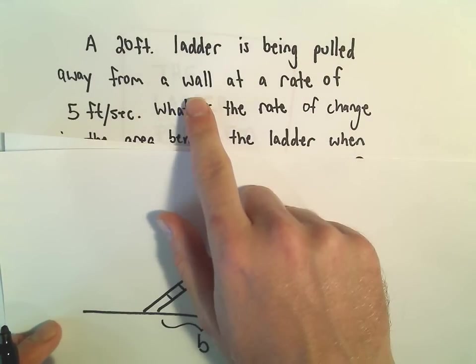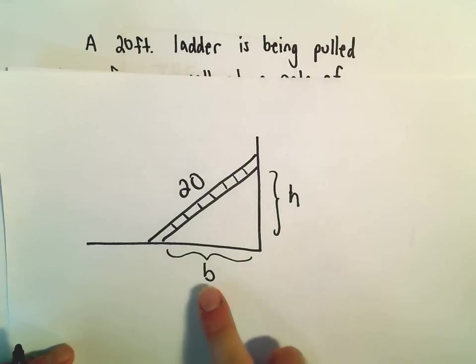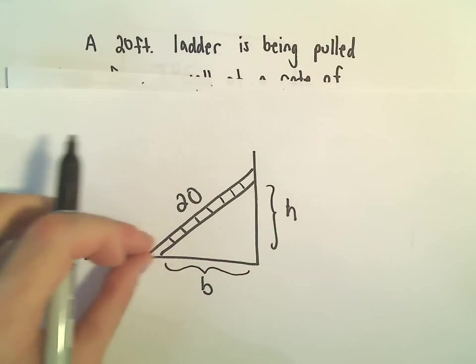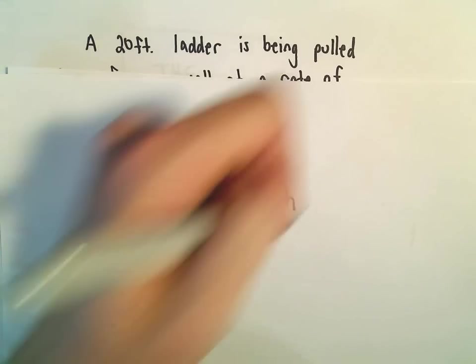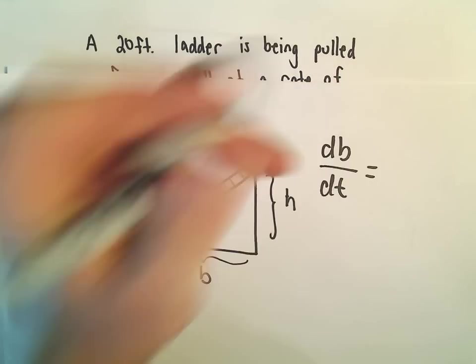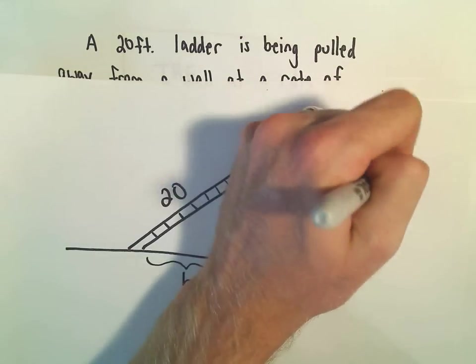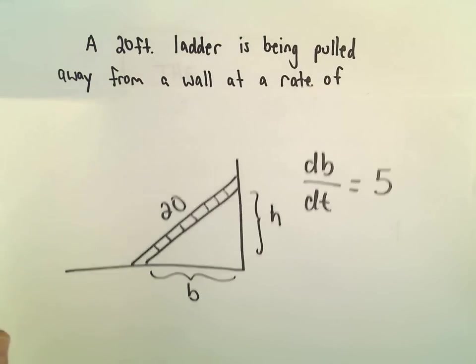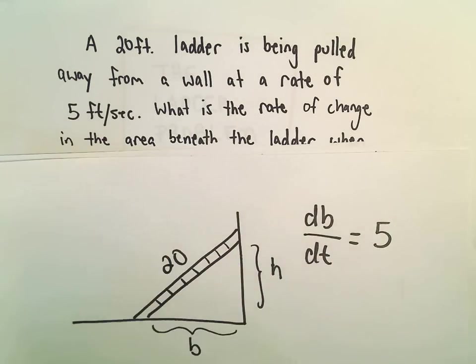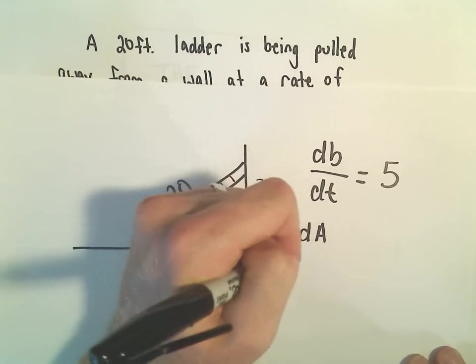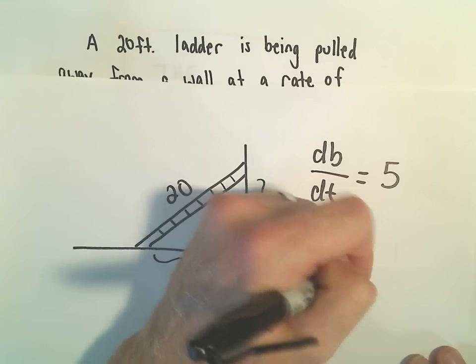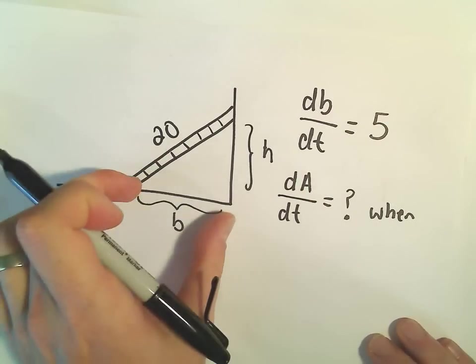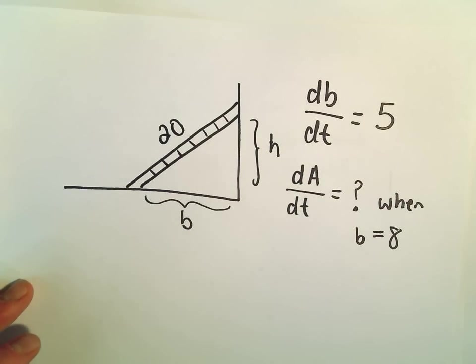They say the ladder is being pulled away from the wall at a rate of 5 feet per second. So which one of these two variables is changing at a rate of 5 feet per second? Well if they're pulling it away, it would be the base. So we can say that the change in the base with respect to time, db/dt, equals 5. I'm going to leave the units off and pick them up back at the end. We want to figure out what's the rate of change in the area with respect to time, dA/dt, and we want to do that when the ladder is 8 feet from the wall. So when b equals 8.